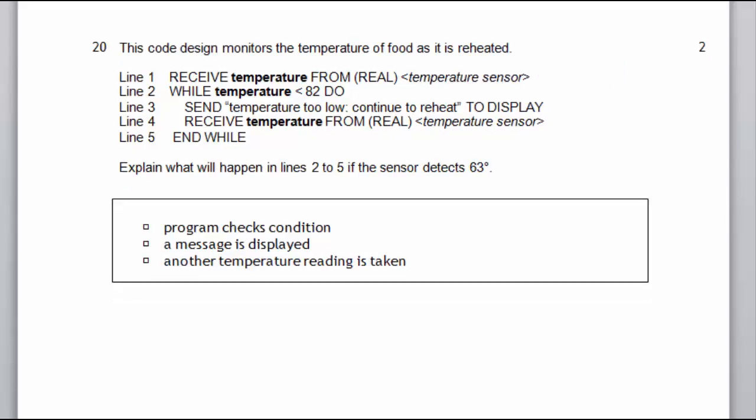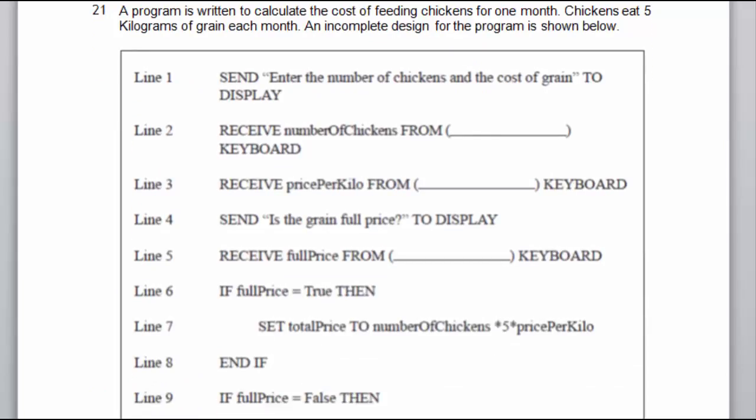What we've got is we've got a piece of code and it's for temperature of foods. And what they're saying is well what happens if they detect 63 degrees? So it's going to be getting read from a sensor. So if it's 63, well it checks the condition. Temperature is less than 82 to the following. So obviously 63 is less than 82. So once it's checked the condition then displays a wee message. So it'll be display temperature too low continue to reheat. And I'll ask for another or I'll take another reading. So it's not from a keyboard. So it's not asking the user but I'll take another reading. And that's what the program does. So you just really write it how you see it really with this as much detail as you can.